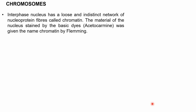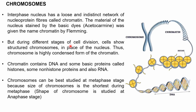To understand chromatin further, we need to know what chromosomes are. During interphase, the nucleus has a loose and distinct network of nucleoprotein fibers called chromatin. Chromatin is darkly stained by basic dyes such as acetocarmine and was named chromatin by scientist Fleming. During different stages of cell division, cells show structured chromosomes in place of the chromatin network. Thus, chromosome is the highly condensed form of chromatin.